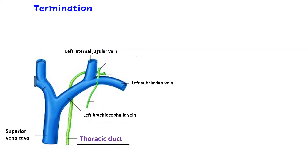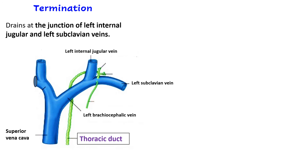The thoracic duct terminates at the junction of the left internal jugular vein and the left subclavian vein. You can see here the green beaded structure which is the thoracic duct terminating at that junction. These two veins form the left brachiocephalic vein, while on the right is the right brachiocephalic vein, and together they form the superior vena cava.